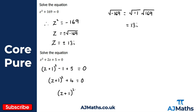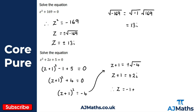Subtract 4 from both sides: (z + 1)² = −4. Take the square root of both sides: z + 1 = ±√(−4). The square root of −4 is 2i, so z + 1 = ±2i. Subtract 1 from both sides: z = −1 ± 2i. Again, this occurs in a conjugate pair — z₁ = −1 + 2i and z₂ = −1 − 2i, which is the conjugate of z₁.